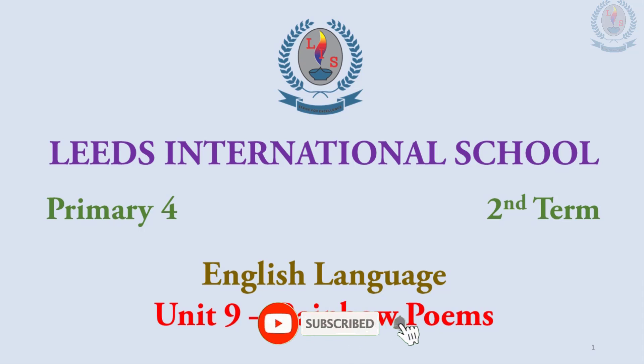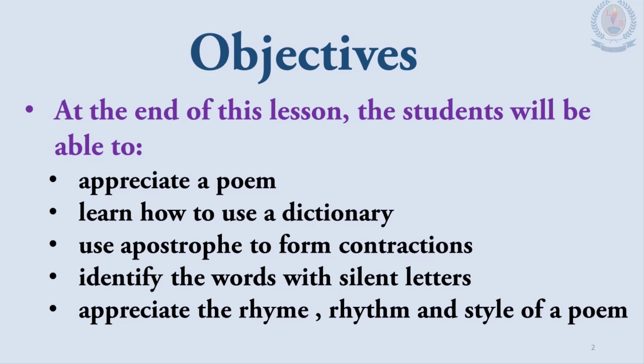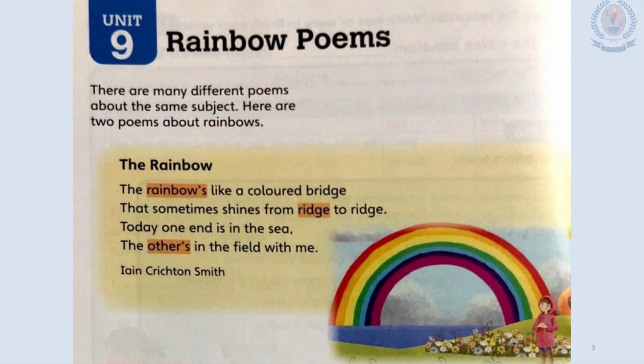Primary 4 Second Term English Language Unit 9: Rainbow Poems. At the end of this lesson, students will be able to appreciate a poem, learn how to use the dictionary, use apostrophes to form contractions, identify words with silent letters, and appreciate the rhyme, rhythm and style of a poem. Turn to page number 70 in your textbook, Unit 9: Rainbow Poems.